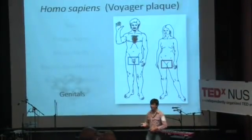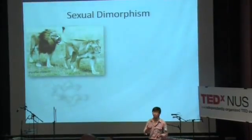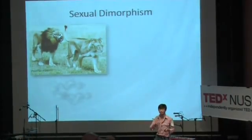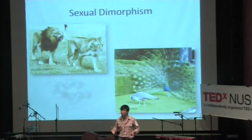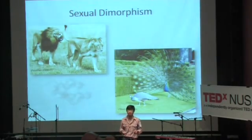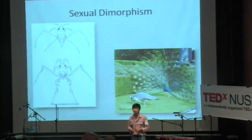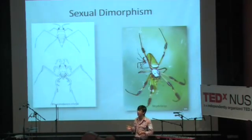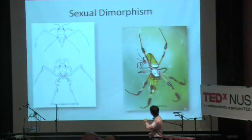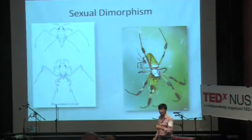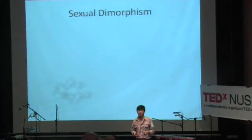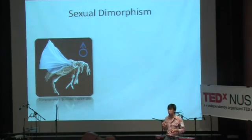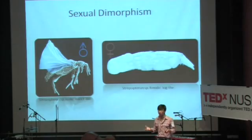Now let's look at other cases of sexual dimorphism in the animal world. We have lions, where the male has a big mane whereas the lioness does not. The peacock: the male has a big train which he uses to impress the female. This is a pond skater — on top is the female and on the bottom is the male; you can see how different they are. And common spiders: females are a lot bigger and more colorful as opposed to males. In one of the most extreme cases is the strepsiptera, a very specialized group of insects — the male is roughly insect-like, but the female looks like a log.